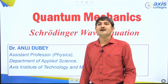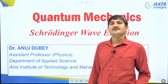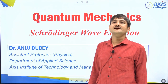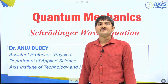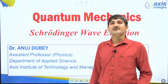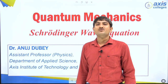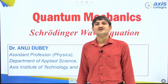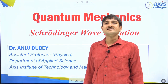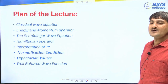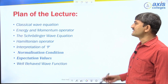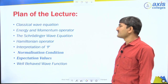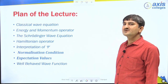In the last lecture, we discussed that if there is a particle and if the particle is moving, there is an associated wave with it. Now the question is, if there is a wave associated with a particle, then what should be the equation of that matter wave? The answer is the Schrödinger equation. So in today's lecture, we will discuss in detail about the Schrödinger equation. In this lecture, we will discuss first the classical wave equation, then energy and momentum operators, and then we will reach the Schrödinger wave equation.